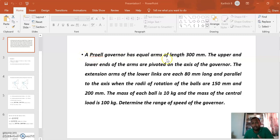The Proell governor has equal arms of length 300 mm. The upper and lower ends of the arms are pivoted on the axis of the governor. The extension arms of the lower links are each 80 mm long and parallel to the axis when the radial rotation of the balls are 150 mm and 200 mm.